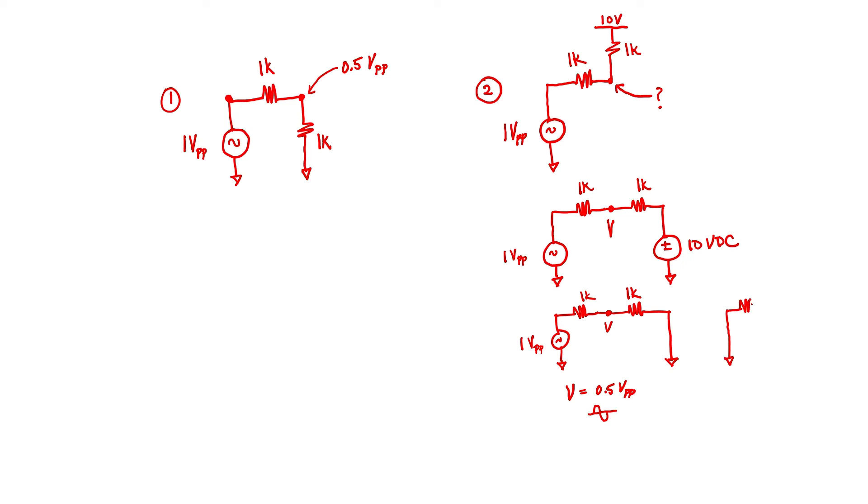Let's find the contribution due to the 10 volt source. I can zero out my AC source. The voltage due to the 10 volt source is going to be 5 volts because it's an even voltage divider. My total voltage, to go back and write the answer, is going to be 5 volts. That's the DC component. And then it's going to have an AC component with a half a volt peak to peak or a quarter volt in amplitude sine wave.